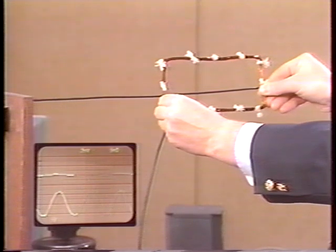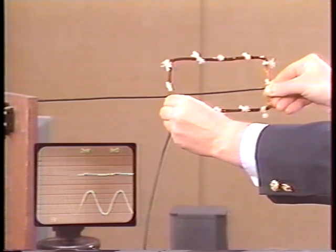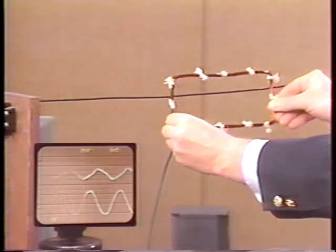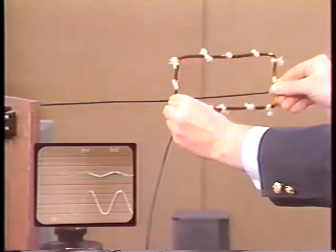The scope traces are triggered on the wire current, the lower trace. So we can see the change in phase as the coil is moved from below the wire to above the wire.